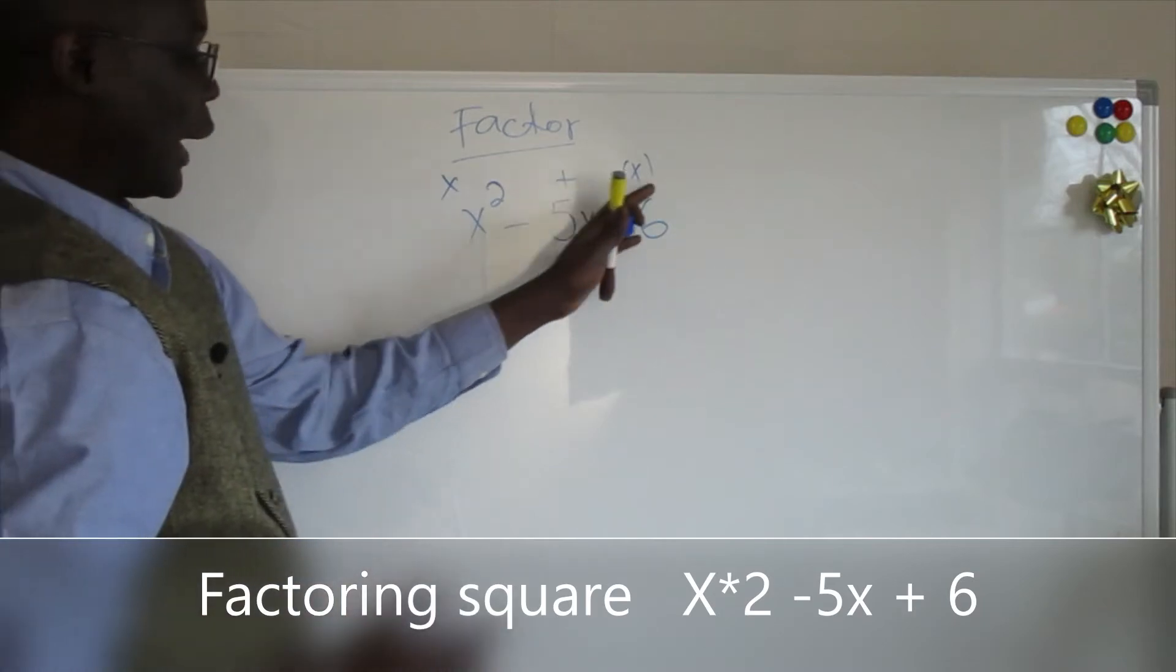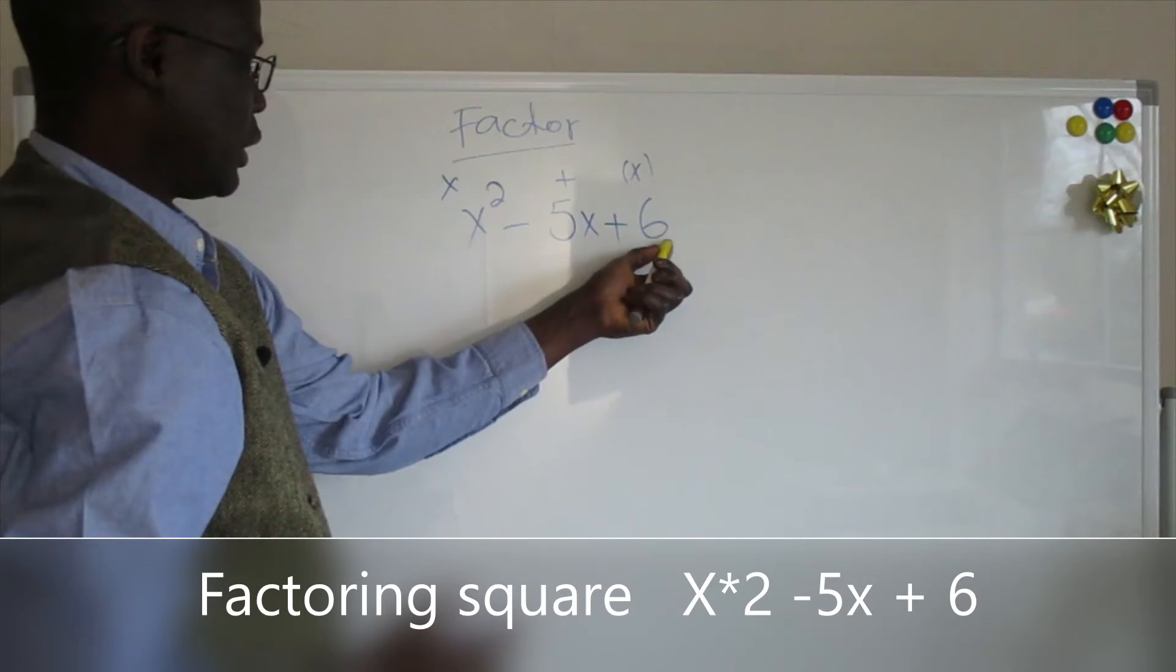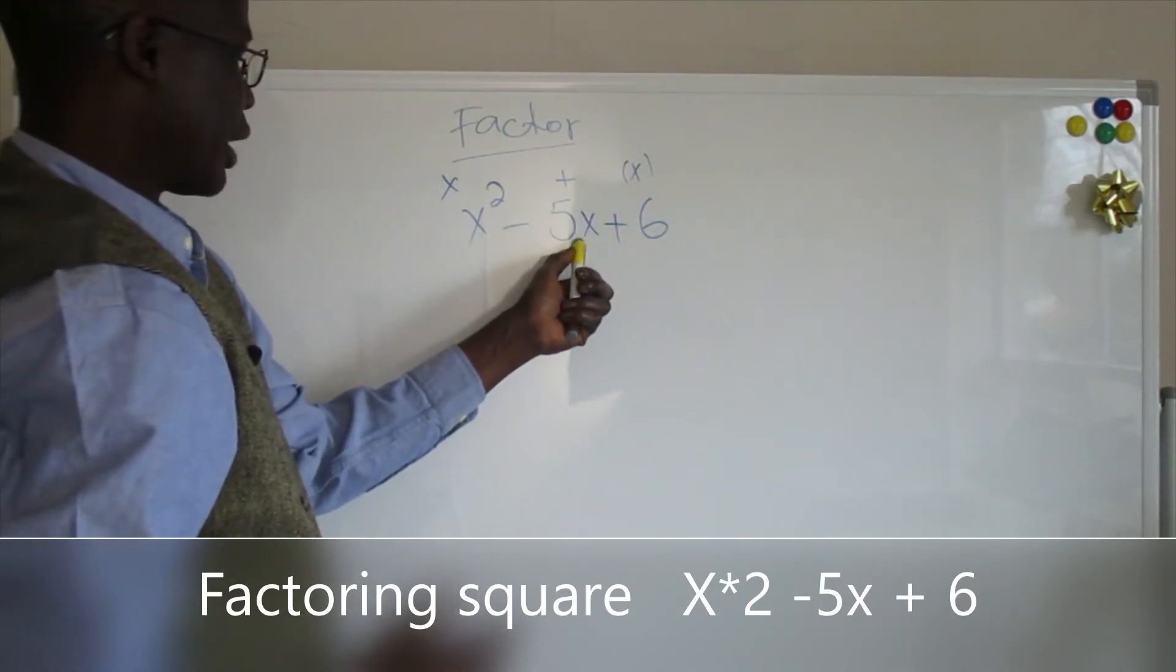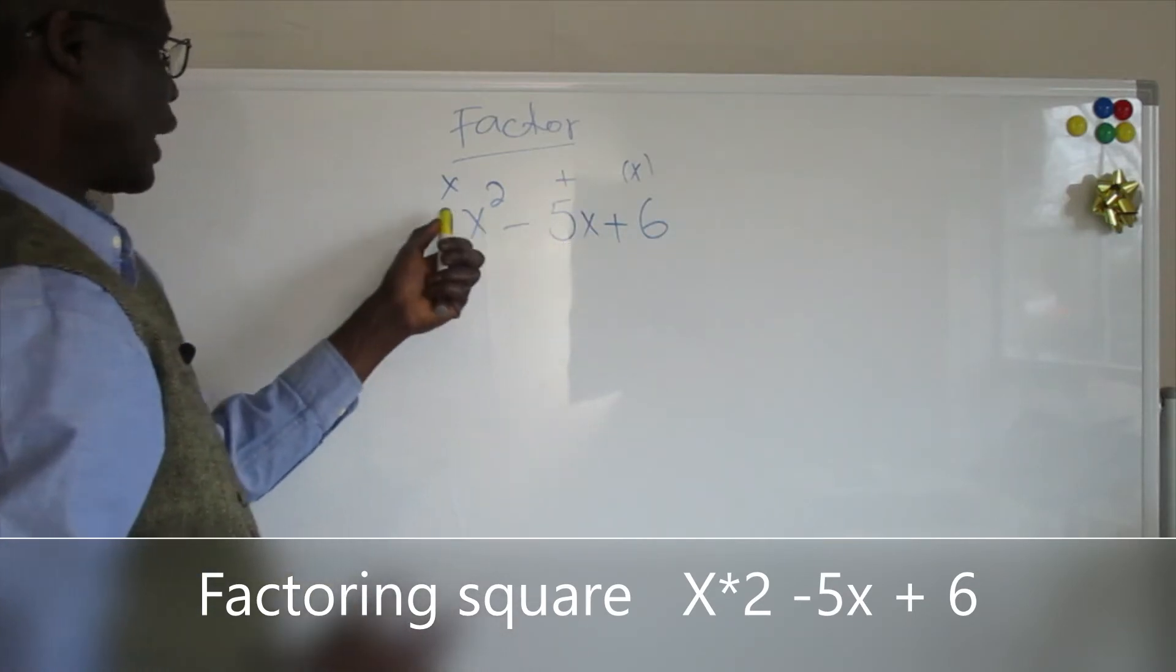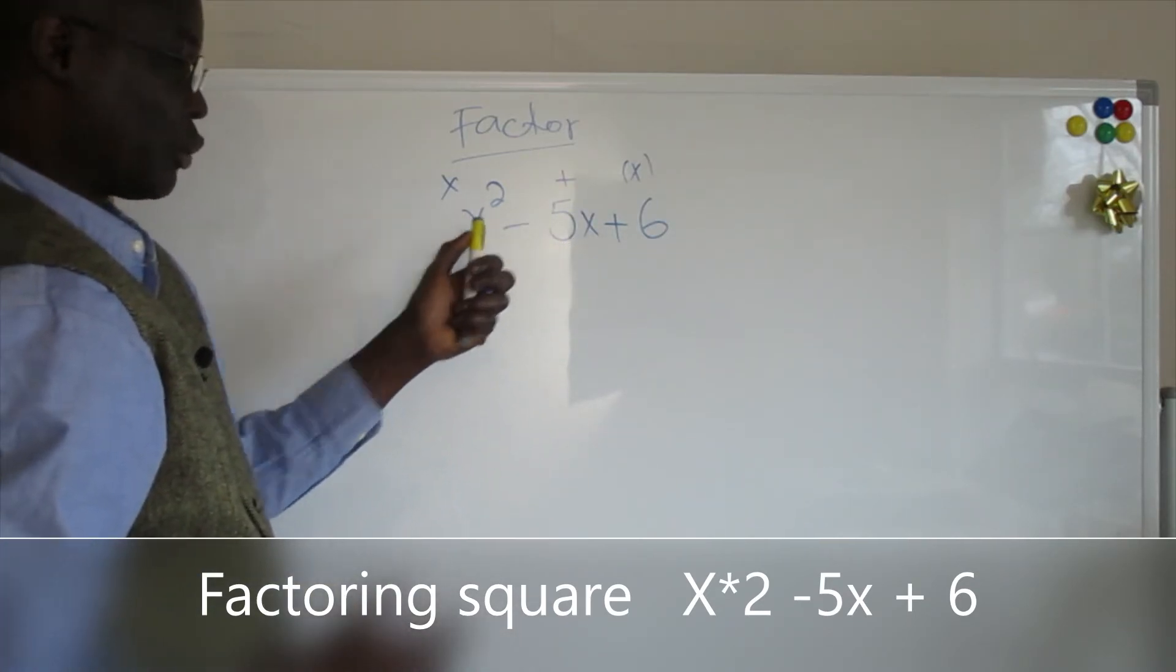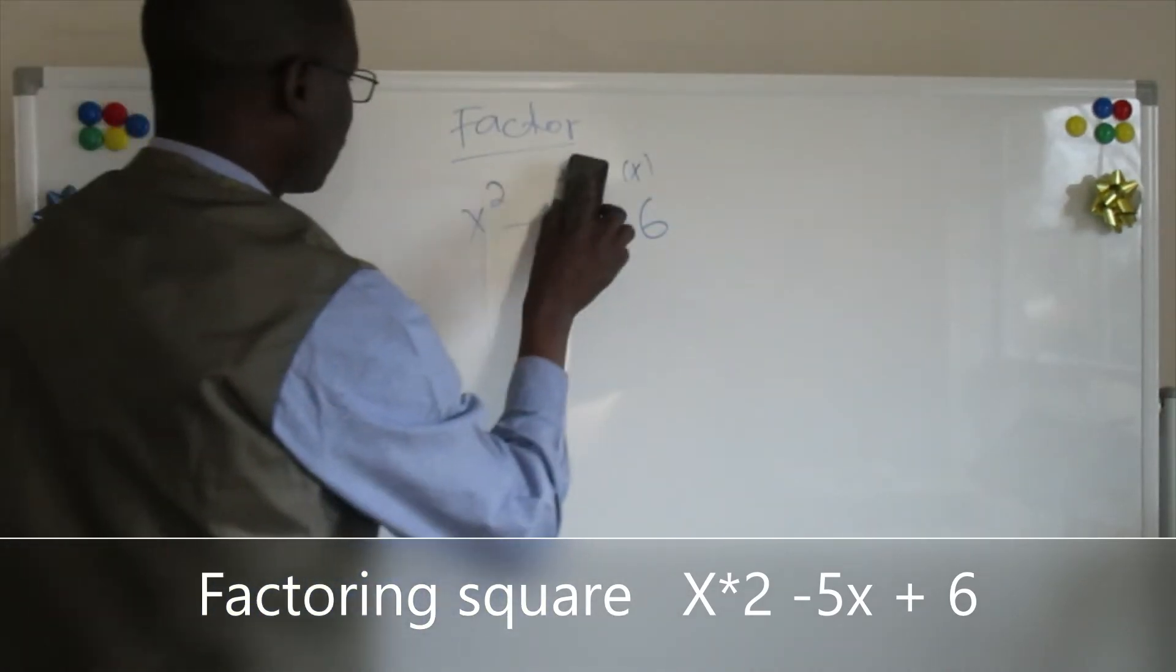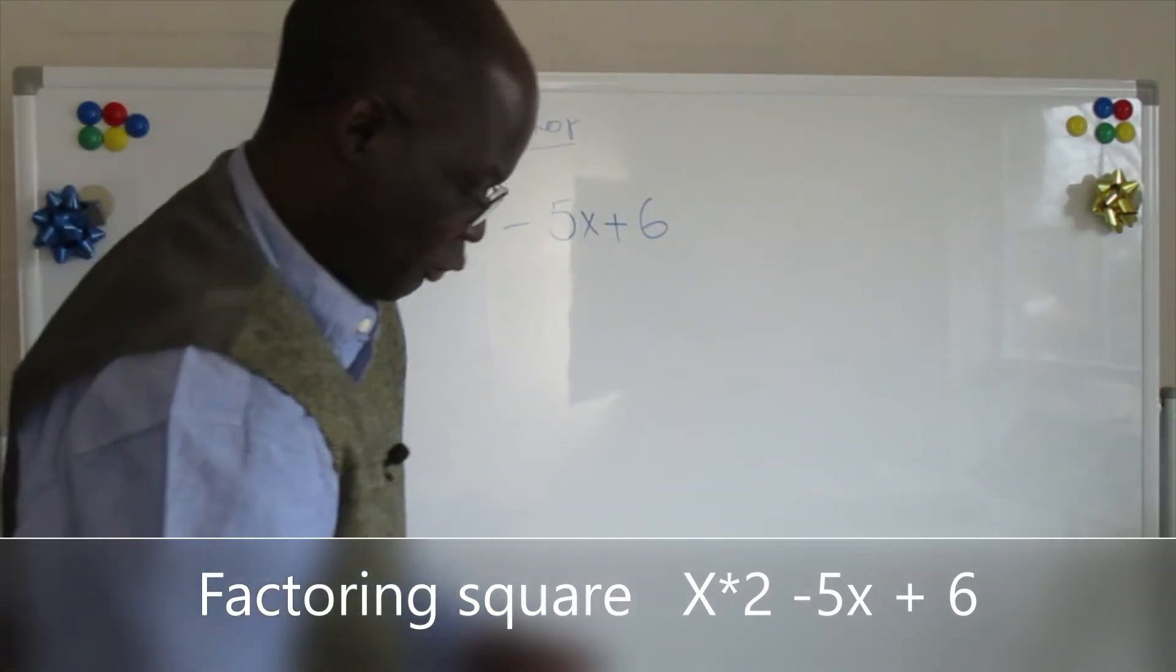It will give you an idea that, okay, what are two numbers times that give me the last one, and what are two numbers combined that give you minus this number. So let's do this. It's simple. I just want you to understand and how you solve it, it's going to be easy for you.